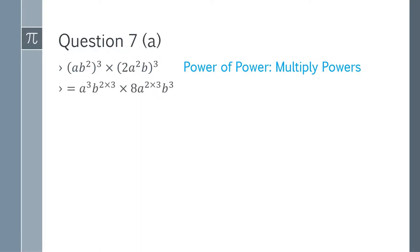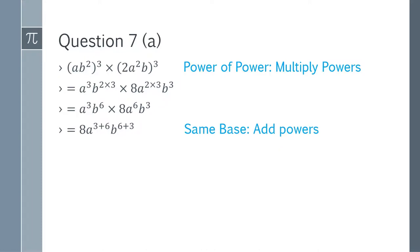Question 7a: (ab^2)^3 multiplied by (2a^2 b)^3. Expand using power of power: a^3 b^(2×3) = a^3 b^6, and 2^3 a^(2×3) b^3 = 8a^6 b^3. Multiply corresponding terms: 8, a^(3+6) = a^9, b^(6+3) = b^9. Answer is 8a^9 b^9.